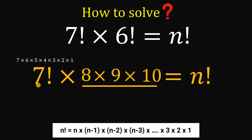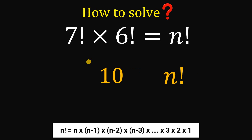So now on the left-hand side we have 7 factorial times 8 times 9 times 10, which is simply 10 × 9 × 8 × 7 × 6 × 5 × 4 × 3 × 2 × 1. Therefore, the left-hand side of our equation is just 10 factorial.